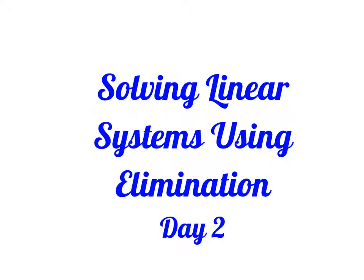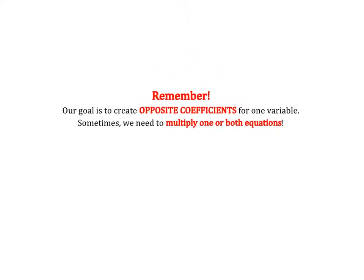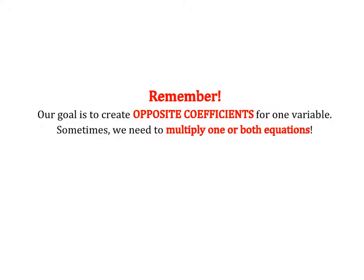Hi everyone, today we are going to continue solving systems of equations using elimination. I want to remind you that our goal when using the elimination method is to create opposite coefficients for one set of our variables — opposite meaning different signs. Sometimes we are given equations that have opposite coefficients already, but sometimes we're not. There are cases where we will need to multiply one or both equations to create the opposite coefficients.